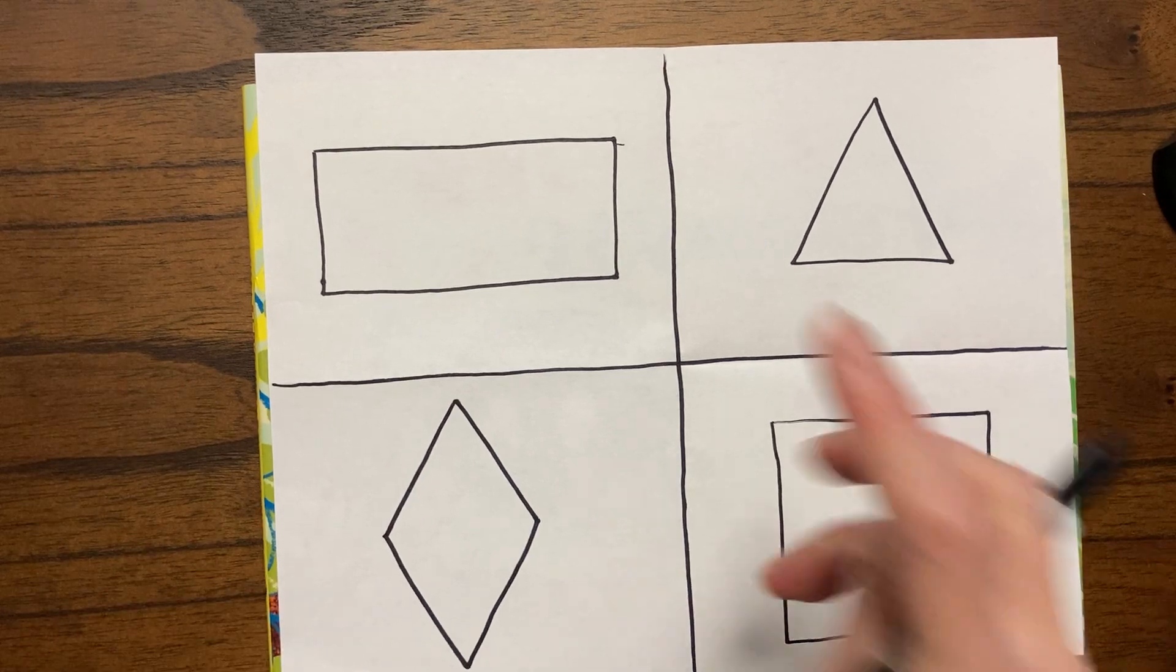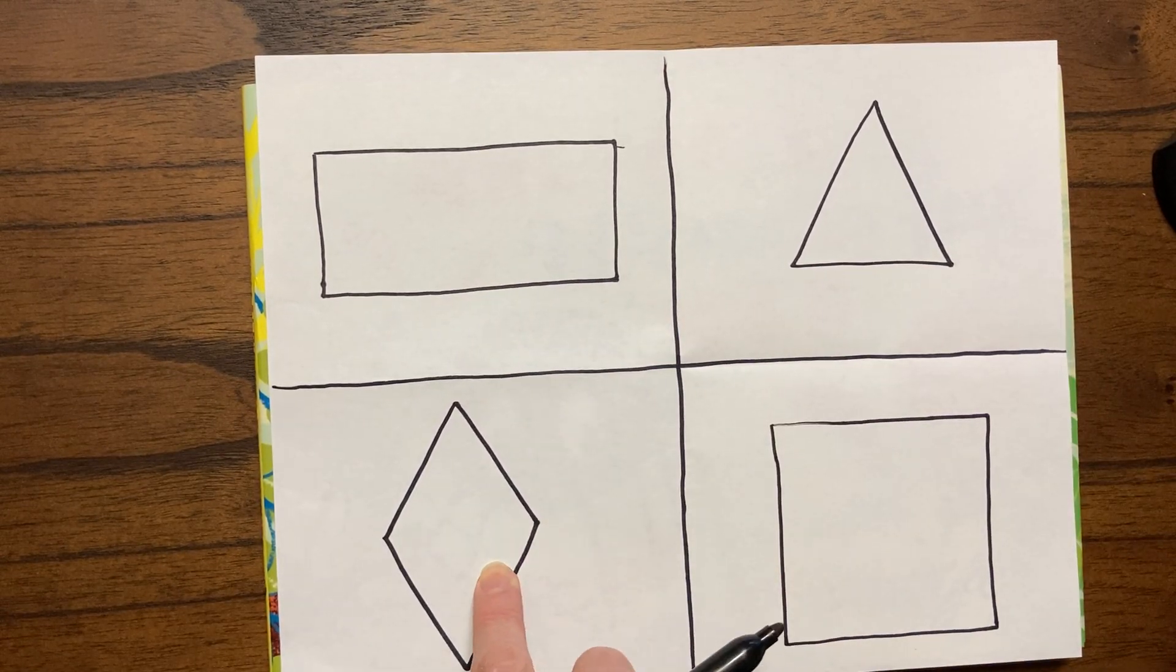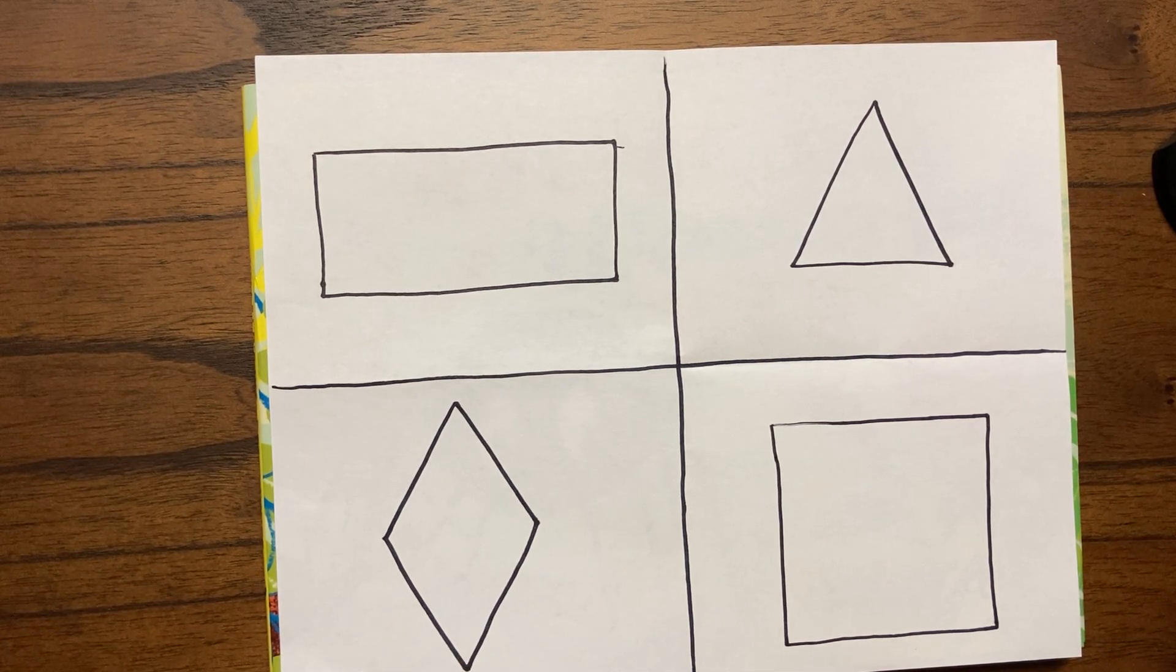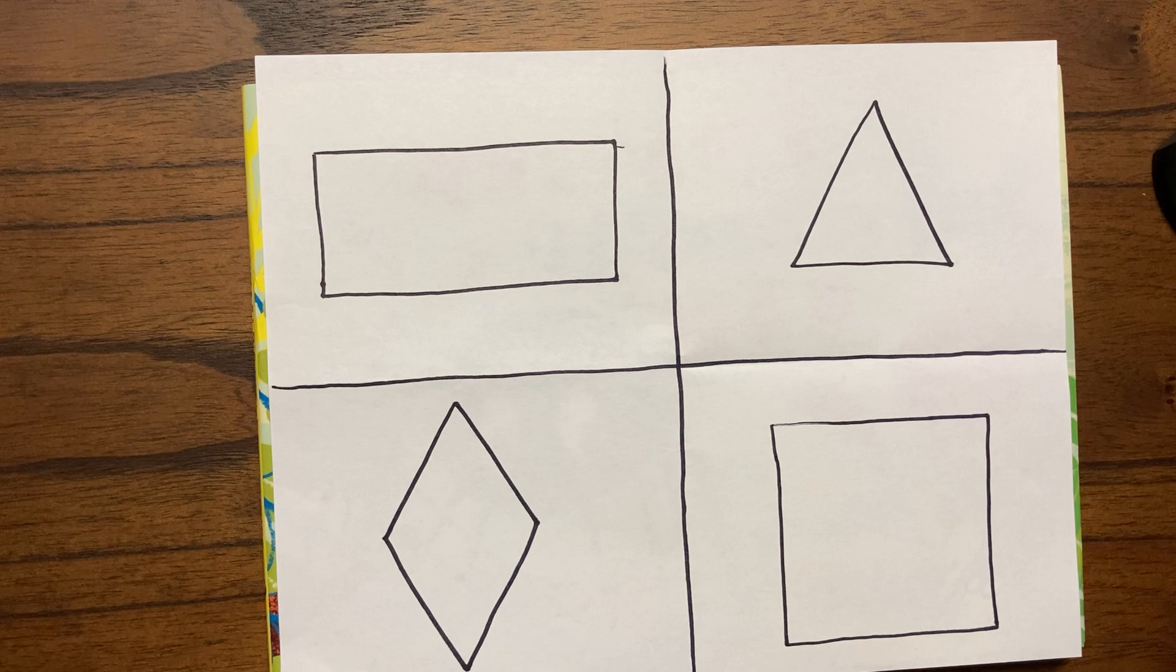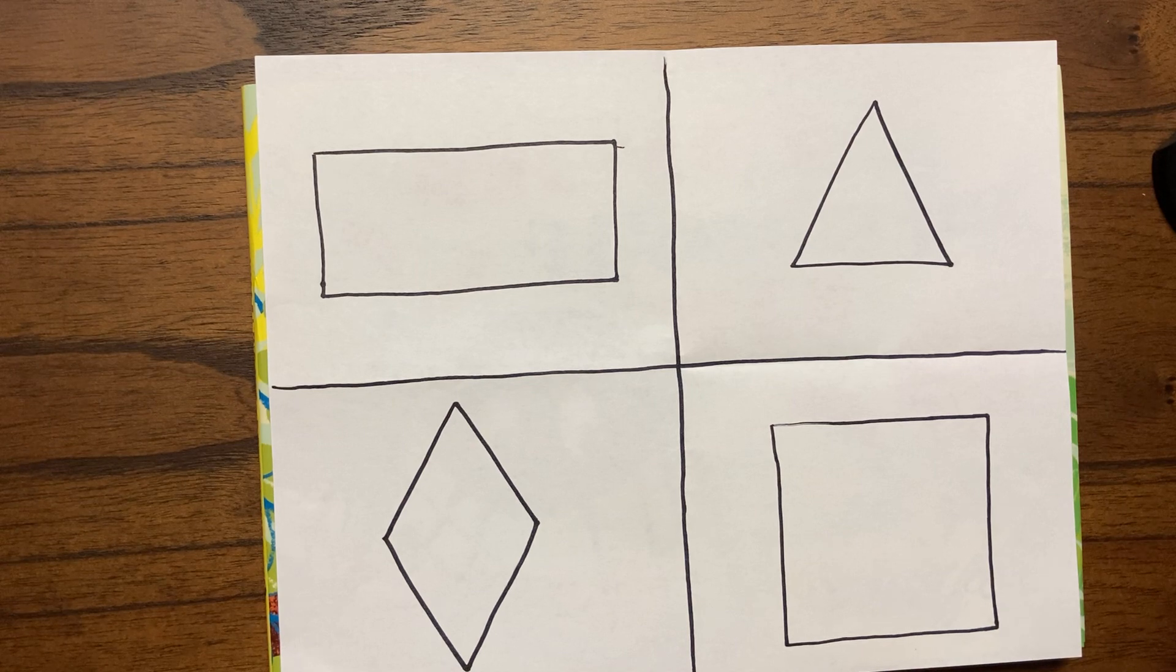All right, so now we have four shapes: our rectangle, our triangle, our square, and our diamond. Now those are great, but we want to turn them into spider webs. So here's how we're going to do that. I think the simplest way to think about doing this is to draw a mini shape inside the shape we just drew.